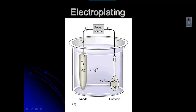So you hook up this hunk of silver — or whatever metal it is — to a power source. And then you run a current through that power source from the metal through the power source to whatever it is you're trying to plate — in this case a spoon.